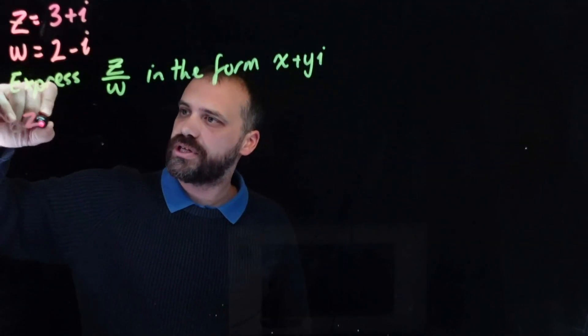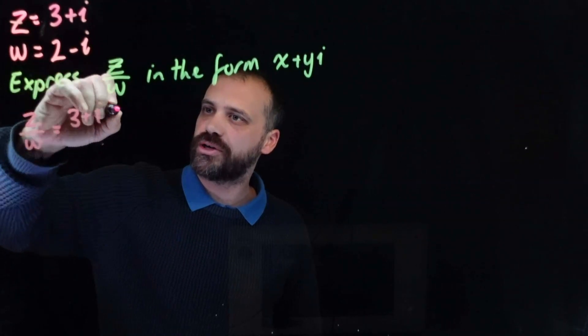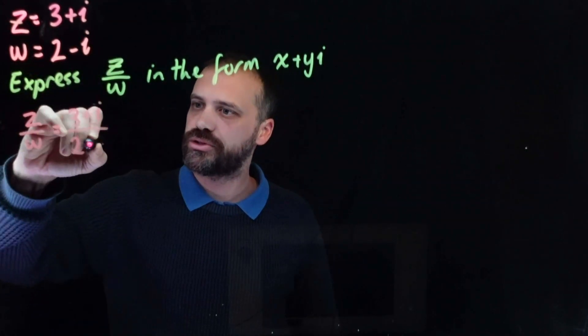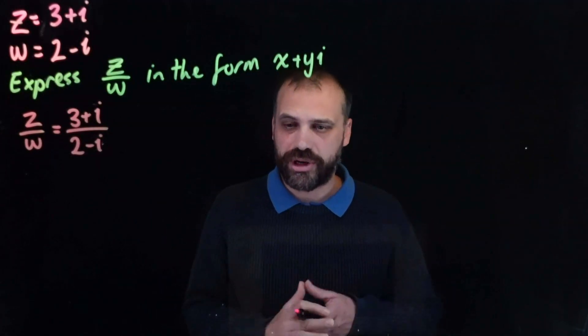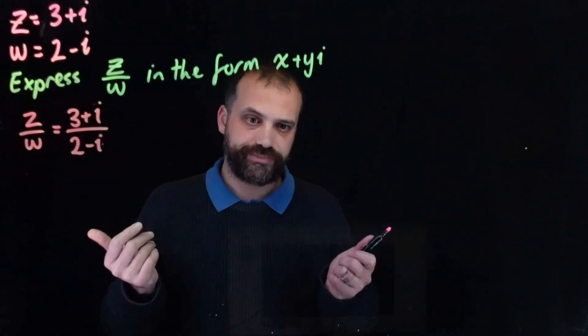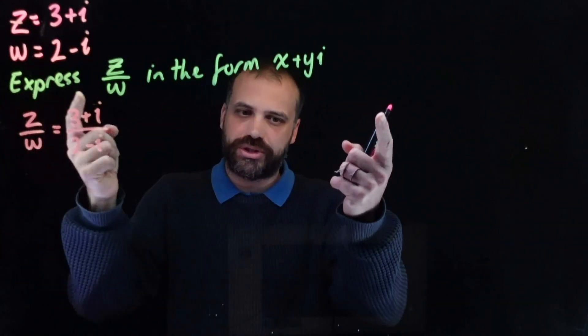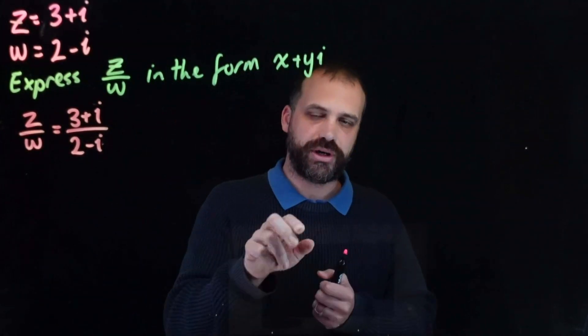We have z divided by w equals 3 plus i divided by 2 minus i. Technically you might say we've done it. This divided by this is equal to this divided by this. That's why the question is worded as express this in the form x plus yi.